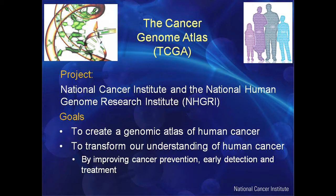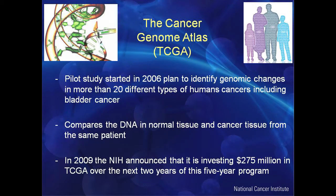I want to introduce you to the Cancer Genome Atlas — a joint project between the National Cancer Institute and the National Human Genome Research Institute, with the goal to create a genome atlas of human cancers. It hopes to transform our understanding of human cancers and improve cancer prevention, early detection, and treatment. This pilot study was started in 2006 to identify genomic changes in more than 20 types of human cancers, including bladder cancer, comparing DNA in normal and cancer tissue across thousands of patients. In 2009, the NIH announced a $275 million investment in the Cancer Genome Atlas over the next two years of this five-year project.